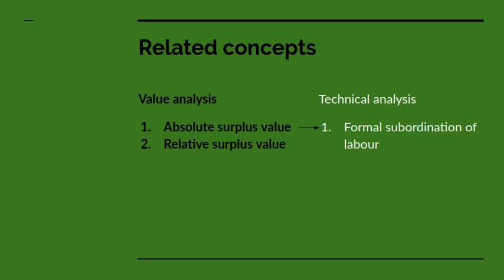In the domain of technical analysis, Marx equates absolute surplus value with what he calls the formal subordination, or sometimes translated as the formal subsumption of labour to capital. And relative surplus value he equates to a different process, which he calls the real subordination, or real subsumption of labour to capital.